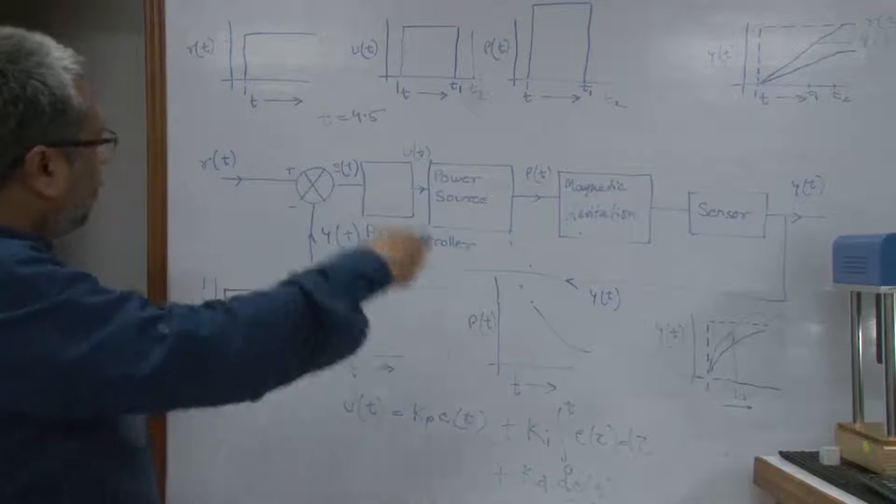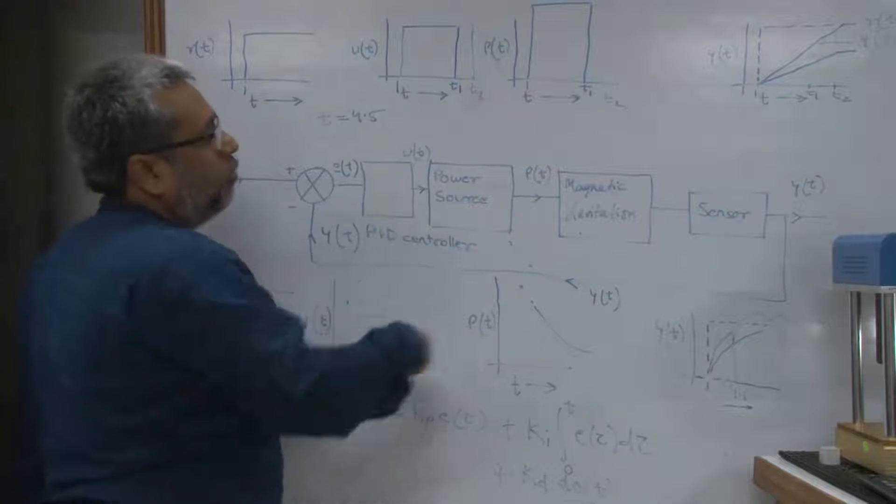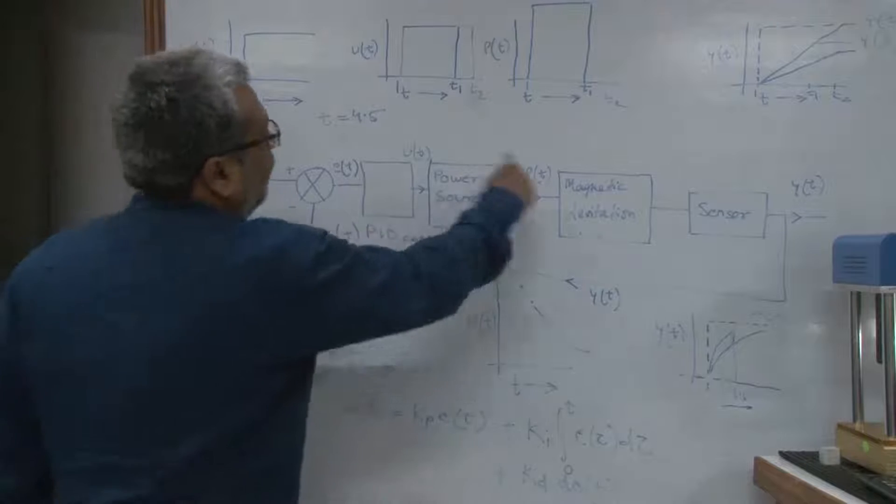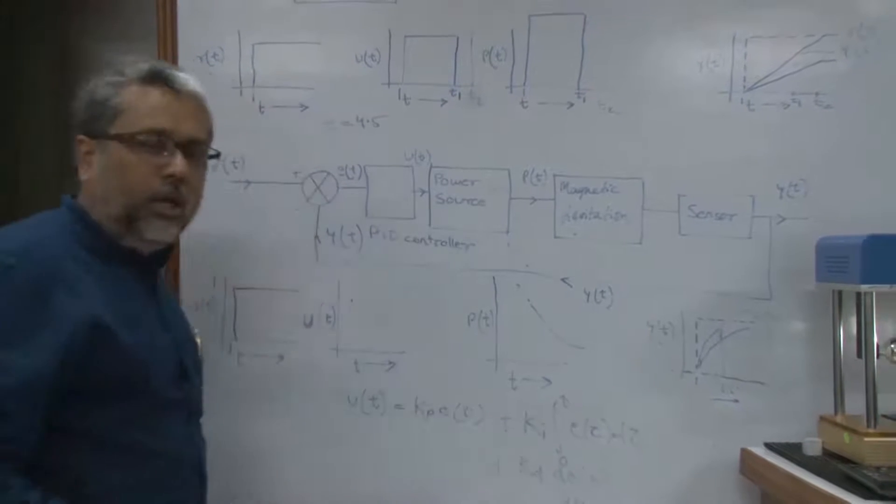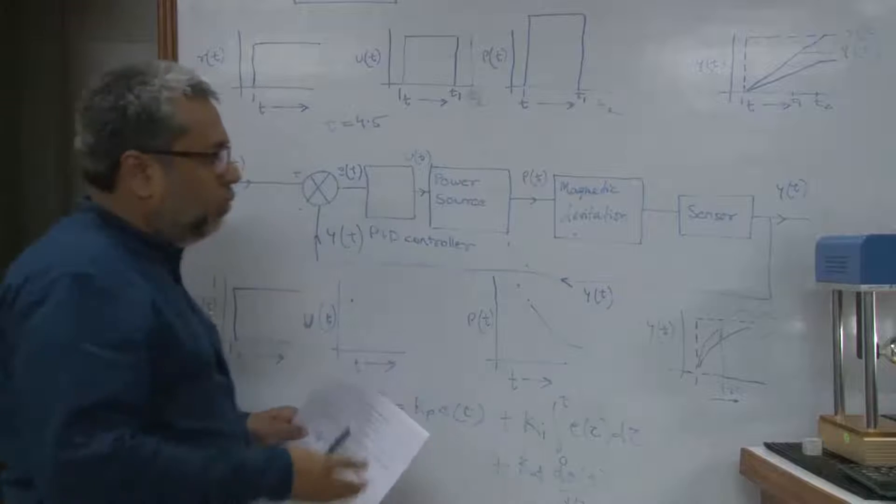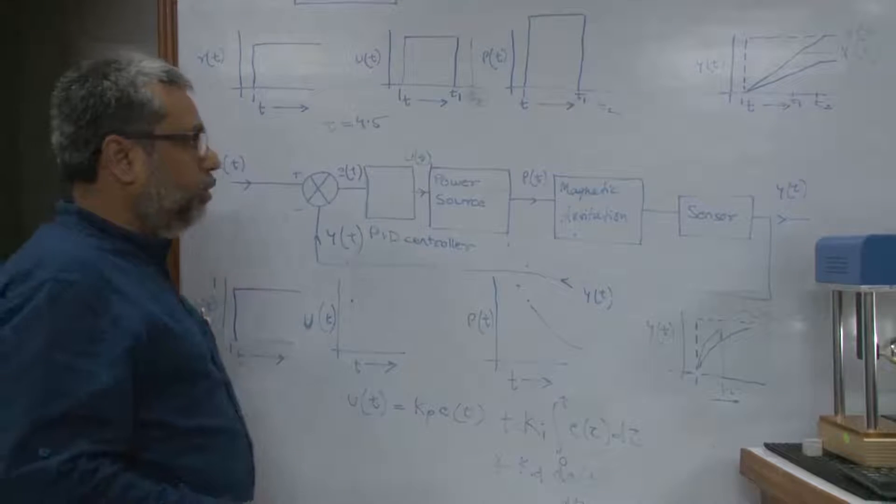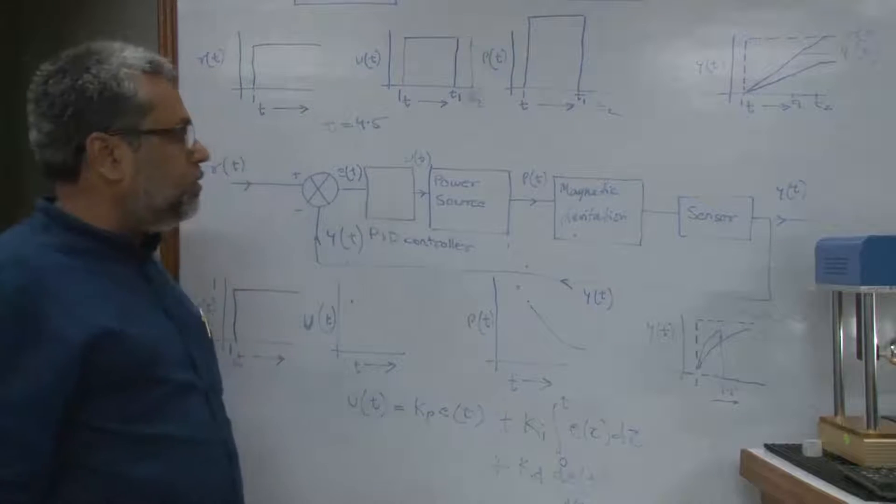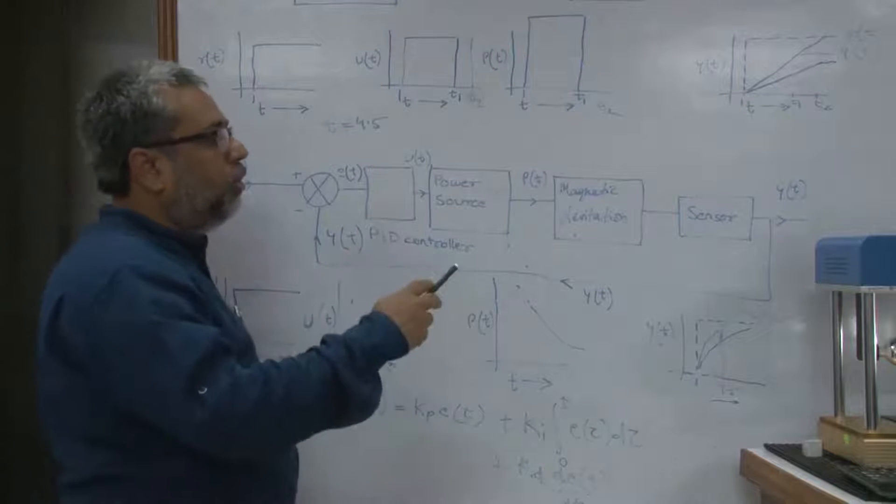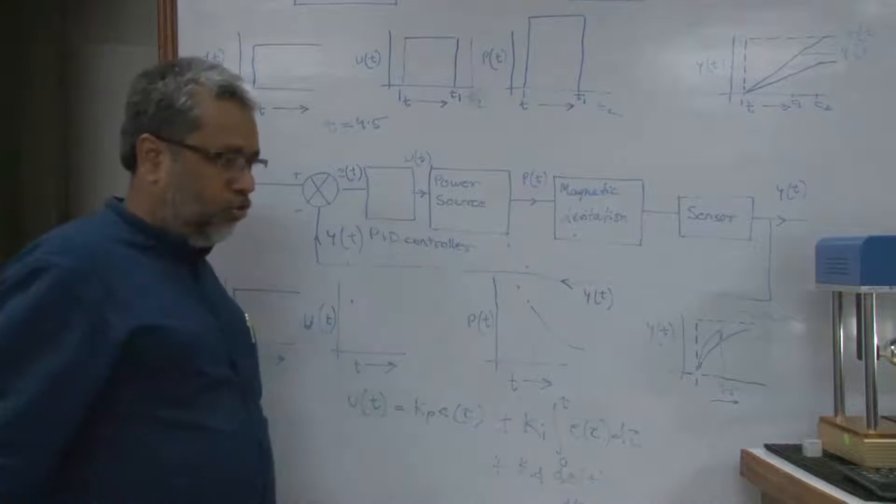That means it can rectify itself and the PID controller takes care of this rectification in a loop and the whole thing happens in a very, very small time. So here we can actually now demonstrate it to you through a magnetic levitation system which can be controlled with the help of a PID controller.